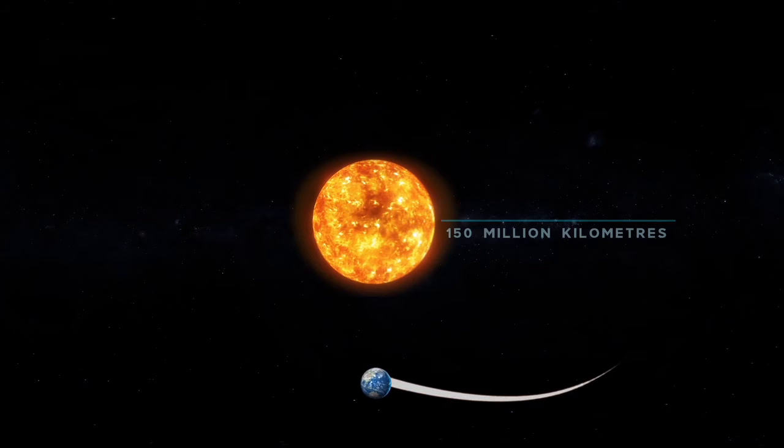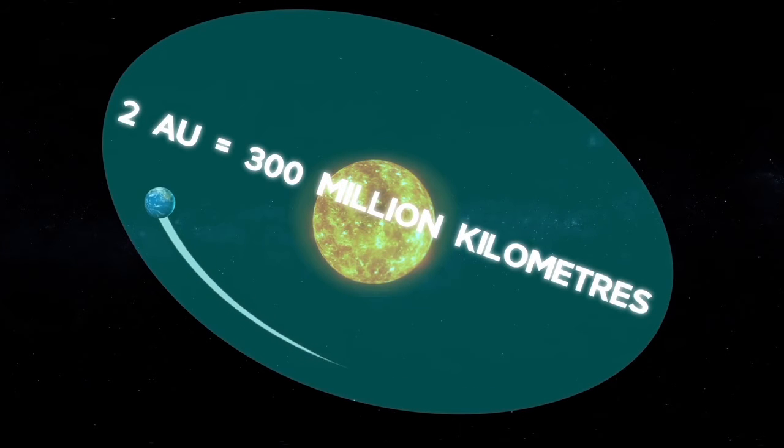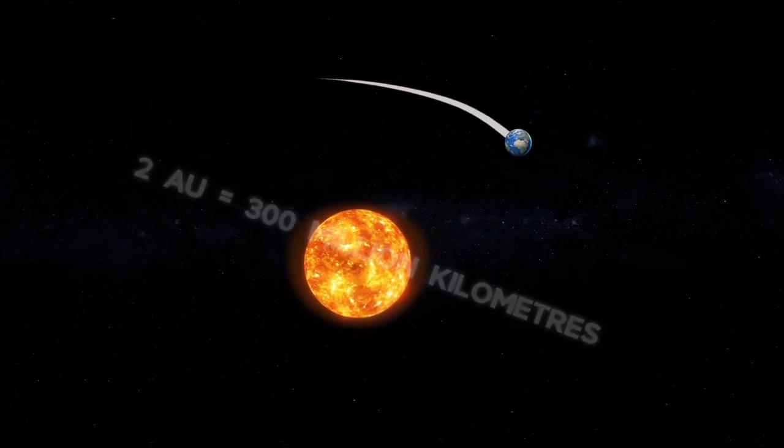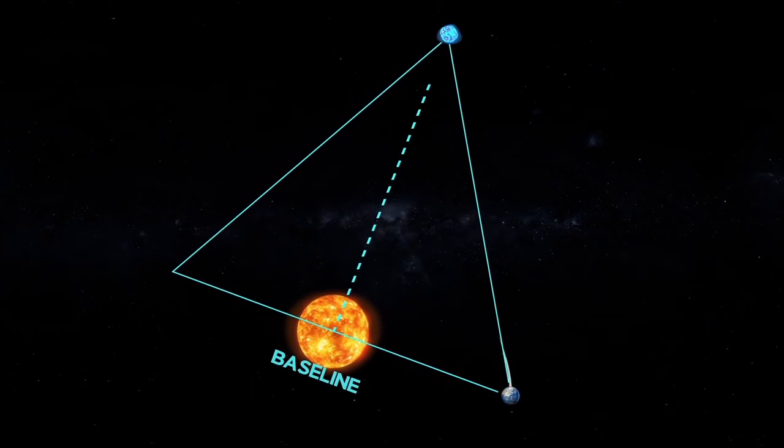Hence, the diameter of the orbit of the Earth is 2 AU, or approximately 300 million kilometers. This is the baseline used to measure the distance to a star.